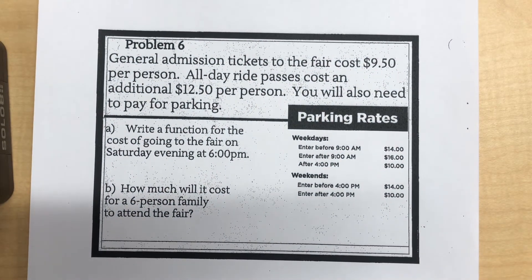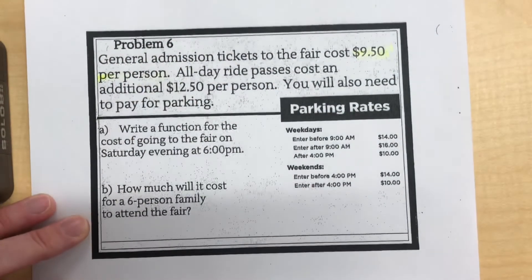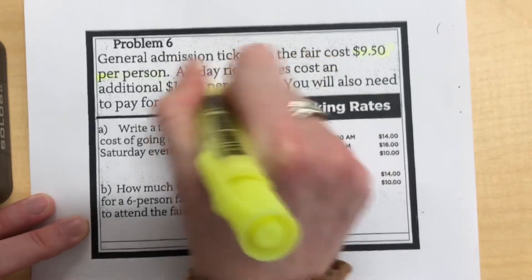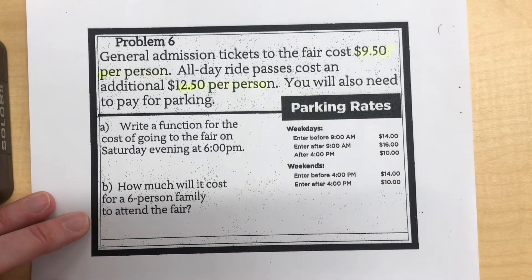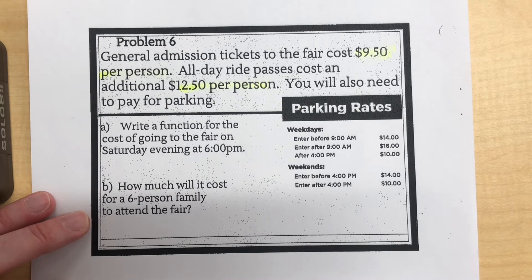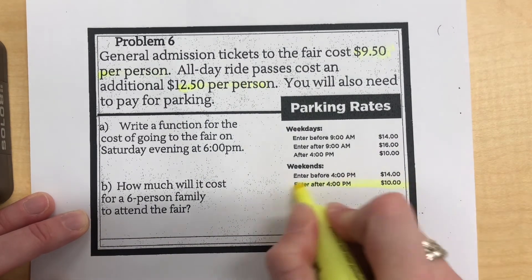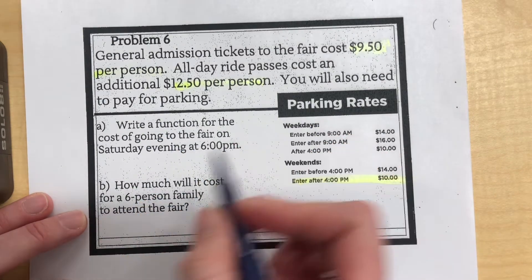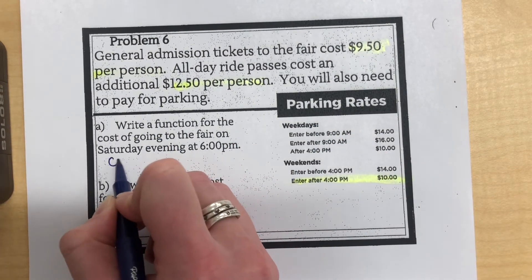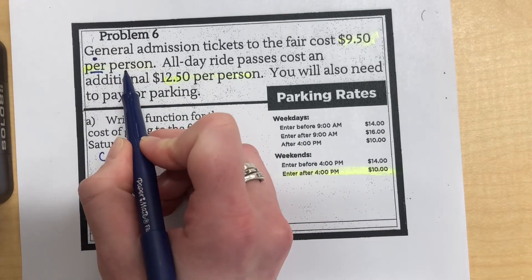The last problem: general admission tickets to the fair are $9.50 per person, and an all-day ride pass costs an additional $12.50 per person. You also have to pay for parking. We write a function rule for the cost of going to the fair on Saturday evening at 6 p.m. Saturday evening is a weekend after 4 p.m., so parking costs $10. So C equals, and $9.50 per person triggers multiplying by the number of people — that's my variable.